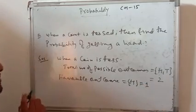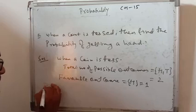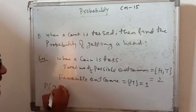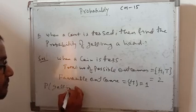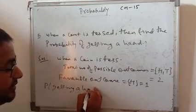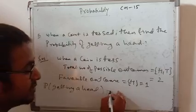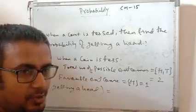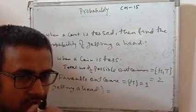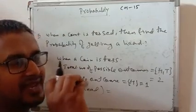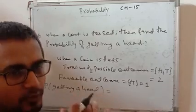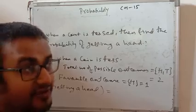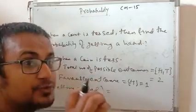Now we find the probability of getting a head. P stands for probability. The formula is: P of an event equals favorable outcomes divided by total number of possible outcomes. Favorable outcome means the outcome which is in your favor. So the formula for probability of any event is P equals favorable outcomes by total number of possible outcomes.